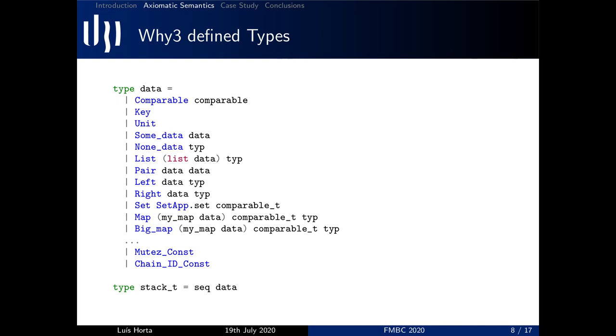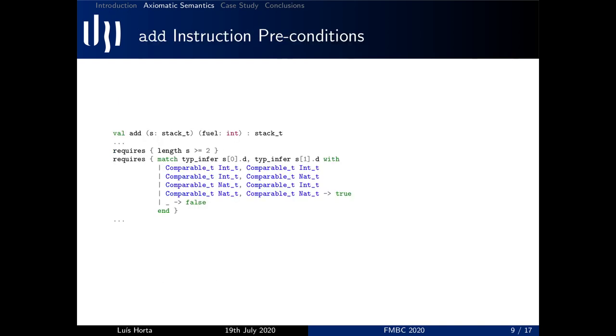And as an example of said semantics, I'm going to show you the semantics for the instruction add, starting with its preconditions. Here you can see that the first precondition accounts for the size of the stack, which has to be equal or greater than two, one for each constant. The second one regards the possible combinations of the types that the add instruction accepts.